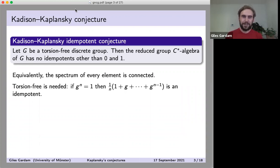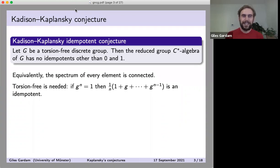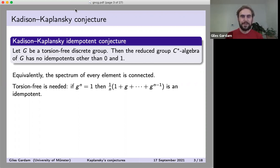There's a conjecture on group C*-algebras called the Kadison-Kaplansky conjecture. It's a really appealingly simple statement: take a torsion-free discrete group G, then its reduced group C*-algebra has no idempotents other than zero and one. An idempotent means something that squares to itself, and we learned in high school how to solve x² = x to find solutions zero and one. The conjecture says there's nothing beyond that living inside the reduced group C*-algebra.